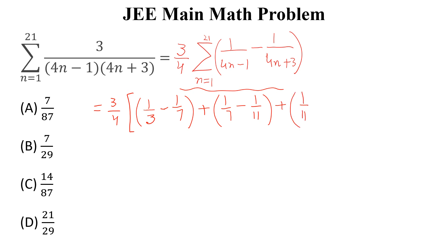Up to if we put n equals 21, so this is equal to 1 over 83 minus 1 over 87.